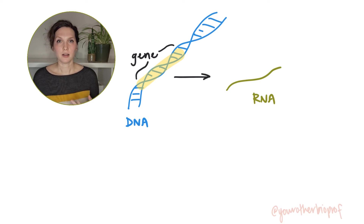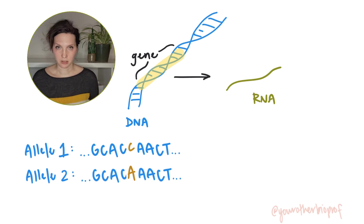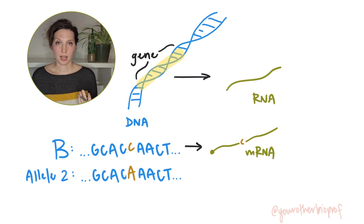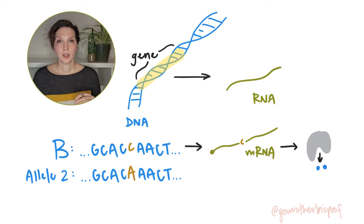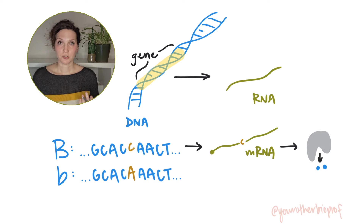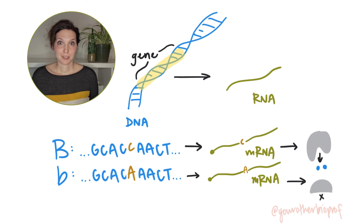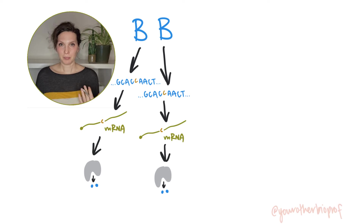Alleles are different versions of a gene — different DNA sequences. The big B allele is transcribed into mRNA and that mRNA is used to produce a protein that makes blue pigment. The little b white allele has a different DNA sequence; it's transcribed into an mRNA with a different sequence, which produces a protein with a different sequence that doesn't produce blue pigment.